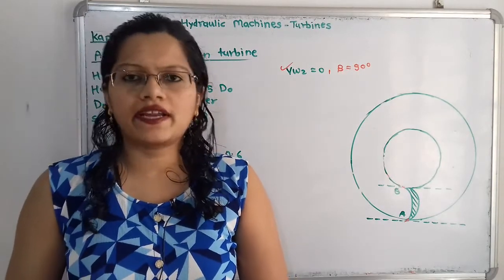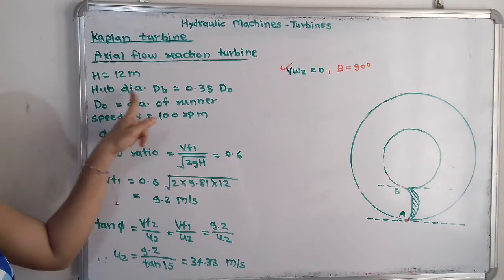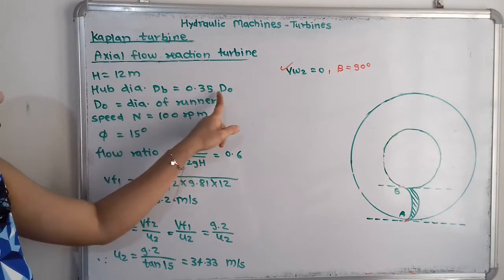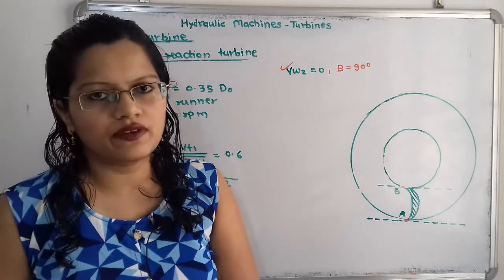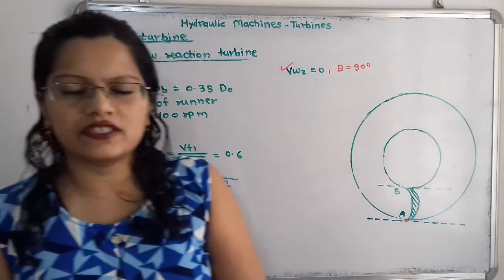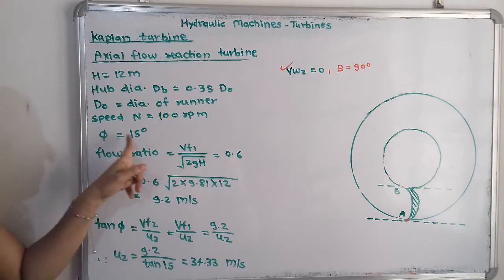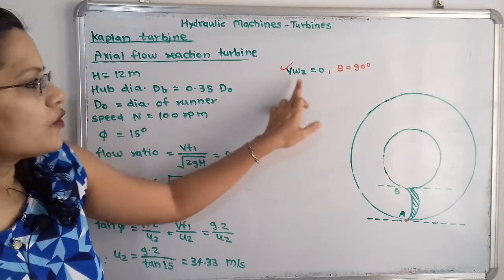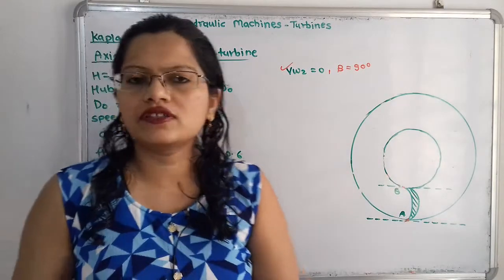Let us first note the given data and draw the velocity diagram. Head H = 12 m, hub diameter db = 0.35 × Do (where Do is the diameter of runner), speed N = 100 rpm, vane angle phi = 15 degrees at outlet tip. Since the velocity of whirl at outlet vw2 = 0, it follows that angle beta = 90 degrees. We will draw the velocity diagram at the outlet tip based on this condition.